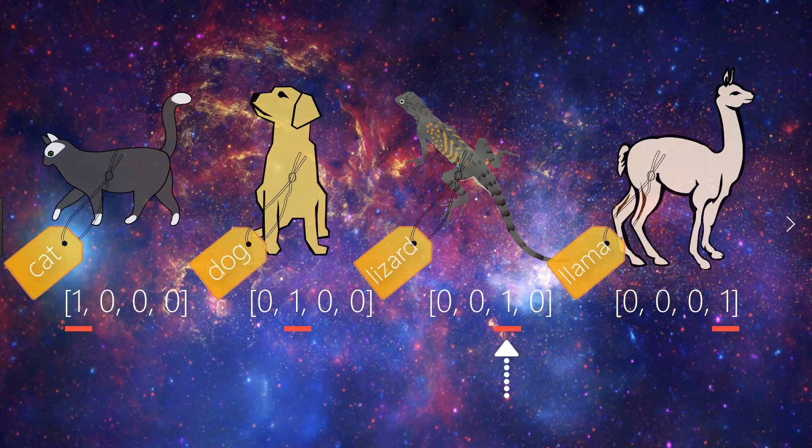And finally, the new one hot encoded vector for the llama category is all 0s except for the fourth element, which is a 1, again, since the fourth element corresponds to the llama category. Now we just arbitrarily said that the cat corresponded to the first element, dog to the second, lizard to the third, and llama to the fourth. But this could very well be in a different order.